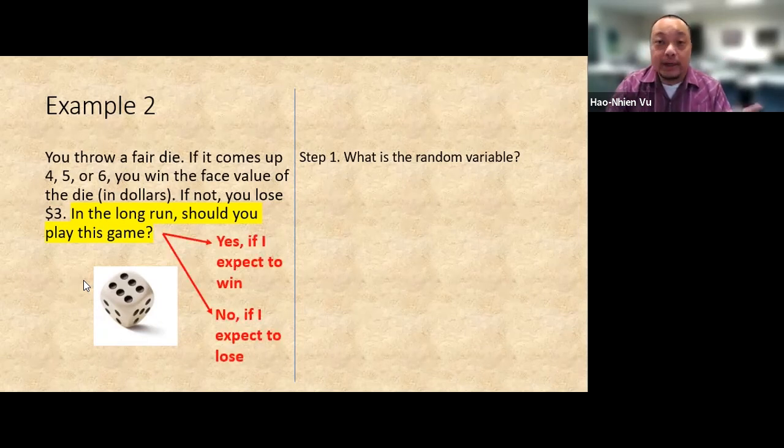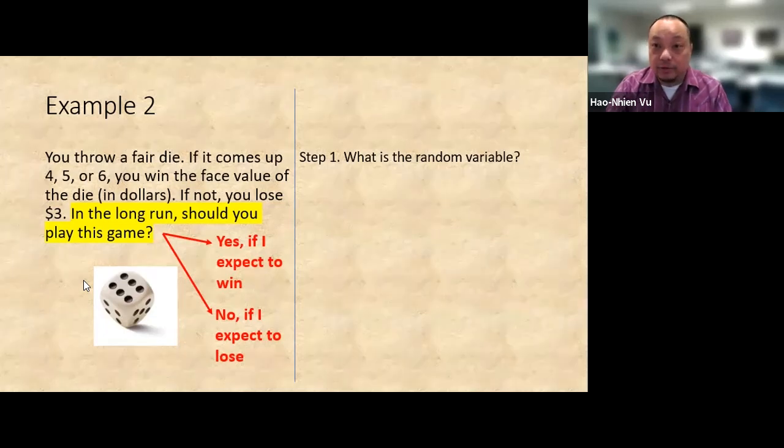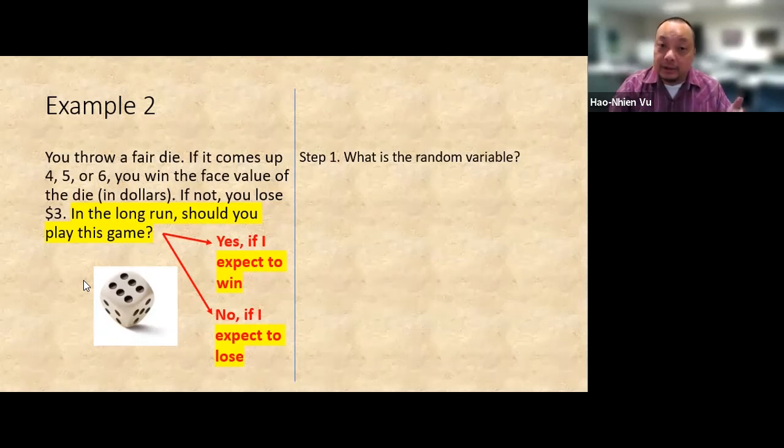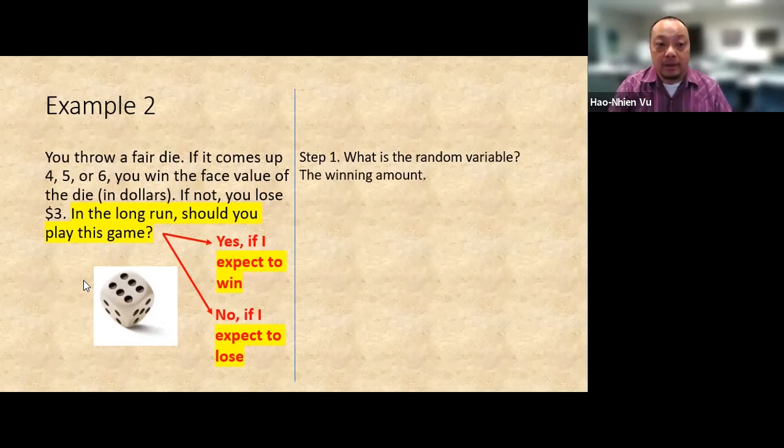Yeah, well, if I expect to win, I would play the game. If I expect to lose, then forget it. Therefore, it's really about the expectation of winning, right? Losing is just negative winning. So the expected value that I'm looking for is the expected value of the winning. Therefore, the random variable is the winning amount.